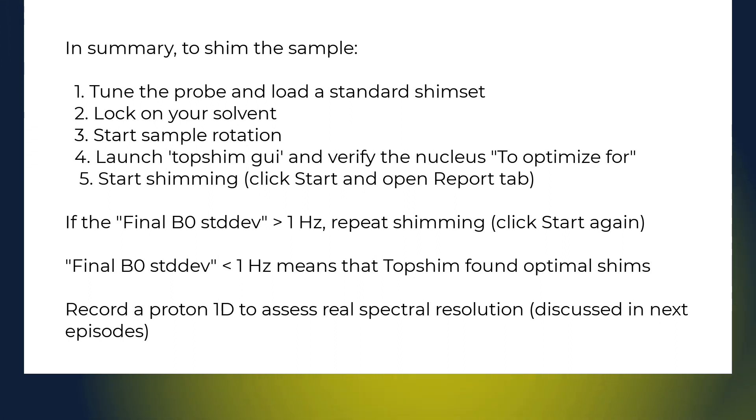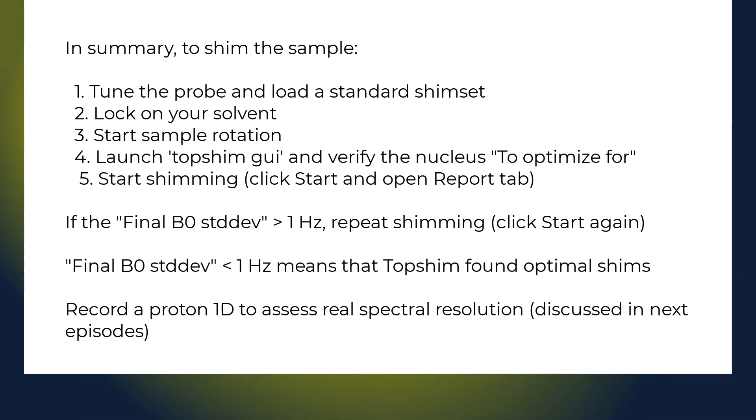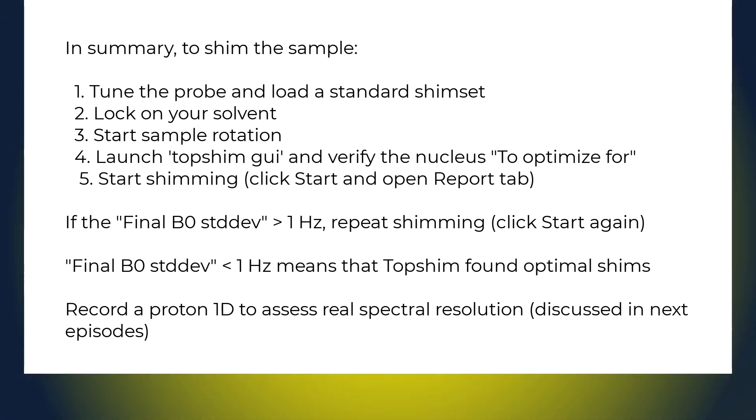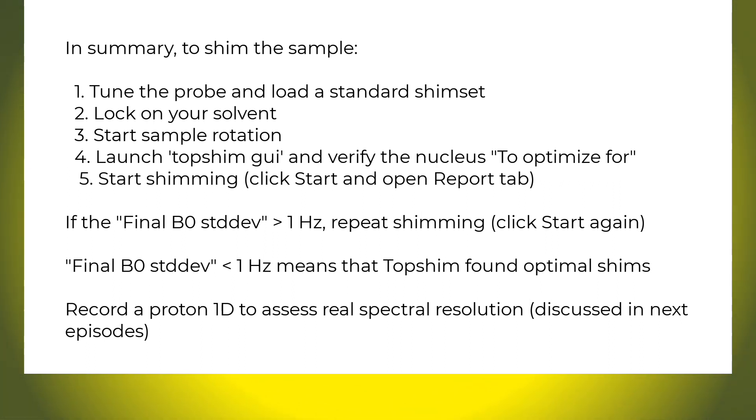In summary, to shim the sample, we tune the probe and load a standard shim set. Lock on our solvent. Start sample rotation. Launch topspin GUI. Verify the nucleus to optimize for. Start shimming by clicking start and watching the report tab. If the final B0 standard deviation is greater than 1 Hz, we should repeat shimming. Final value less than 1 Hz means the top shim found optimal shims. You should record a Proton 1D to assess real spectral resolution. This is discussed in next episodes.